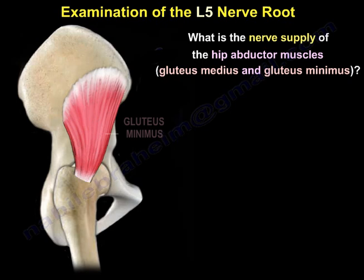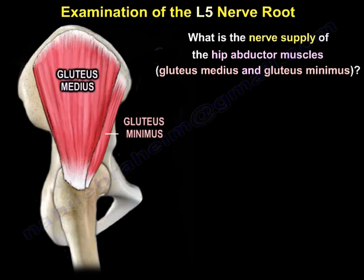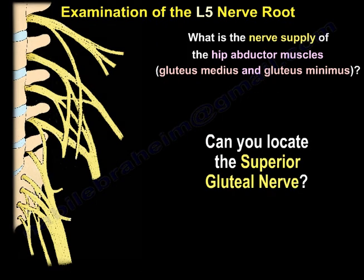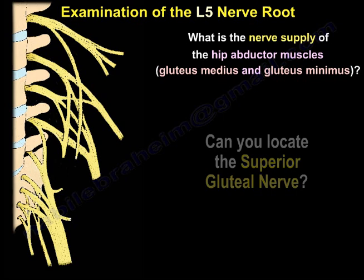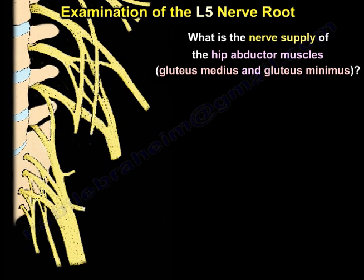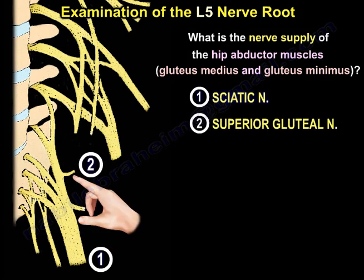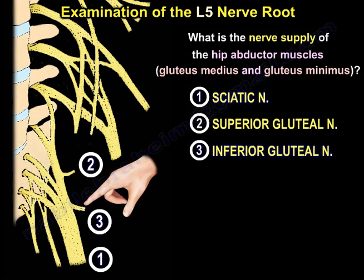What is the nerve supply of the hip abductors, the gluteus medius and gluteus minimus — the superior gluteal nerve? Can you locate the superior gluteal nerve in this diagram? The biggest nerve in the diagram is the sciatic nerve. Number one is the sciatic nerve. Number two is the higher one — the superior gluteal nerve. Number three is the inferior gluteal nerve because it is lower.